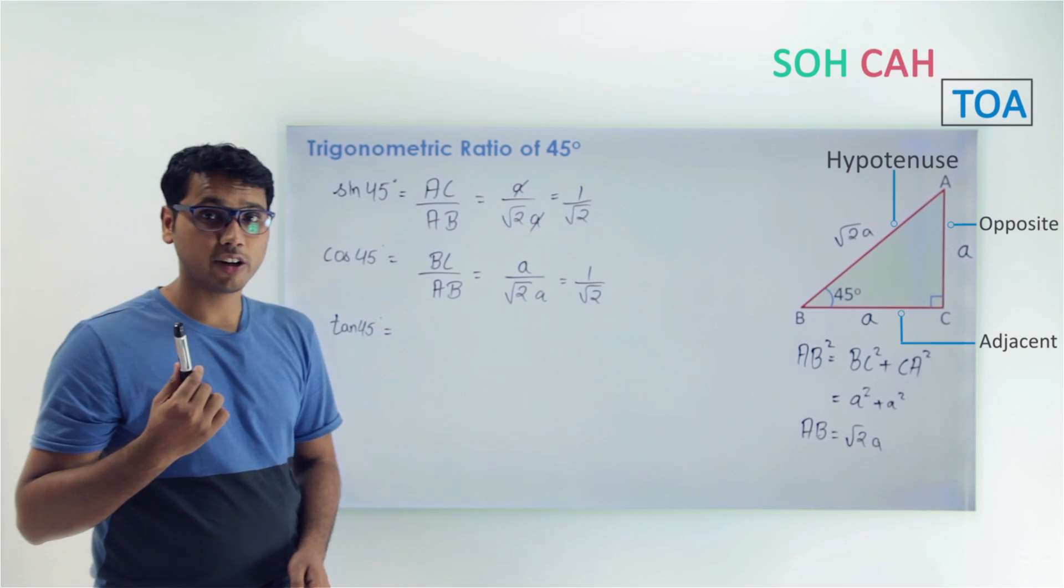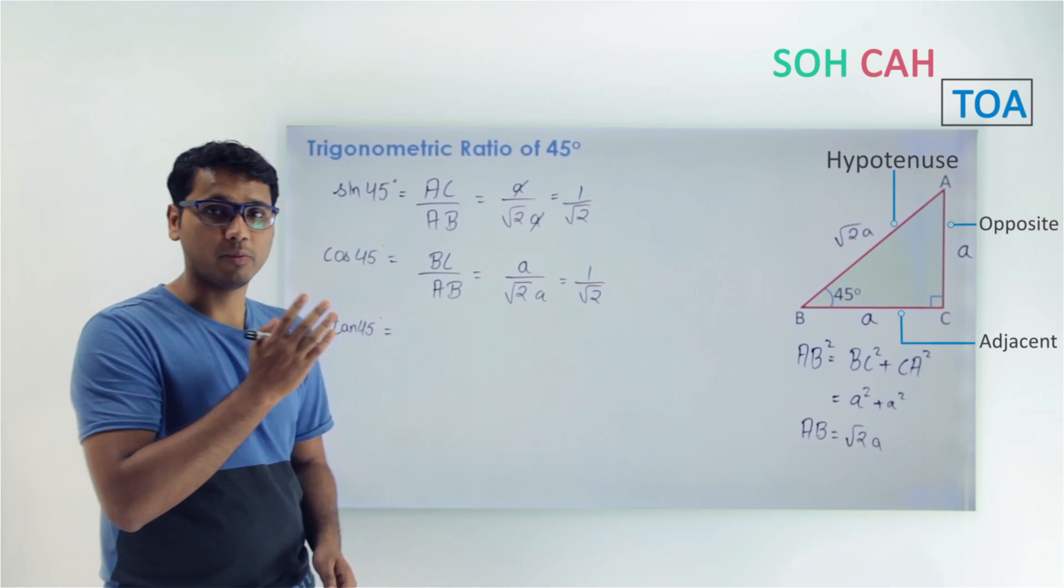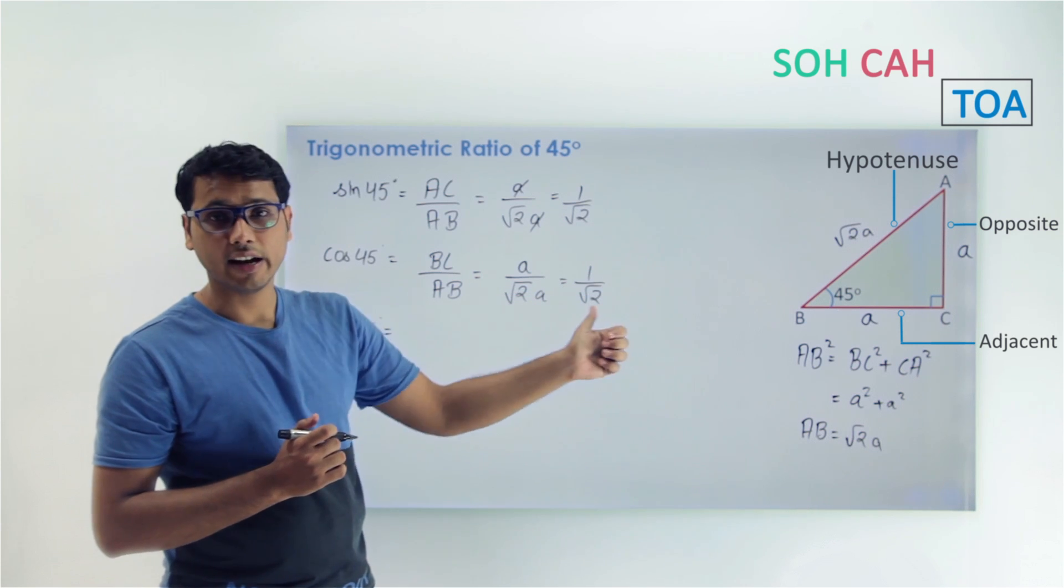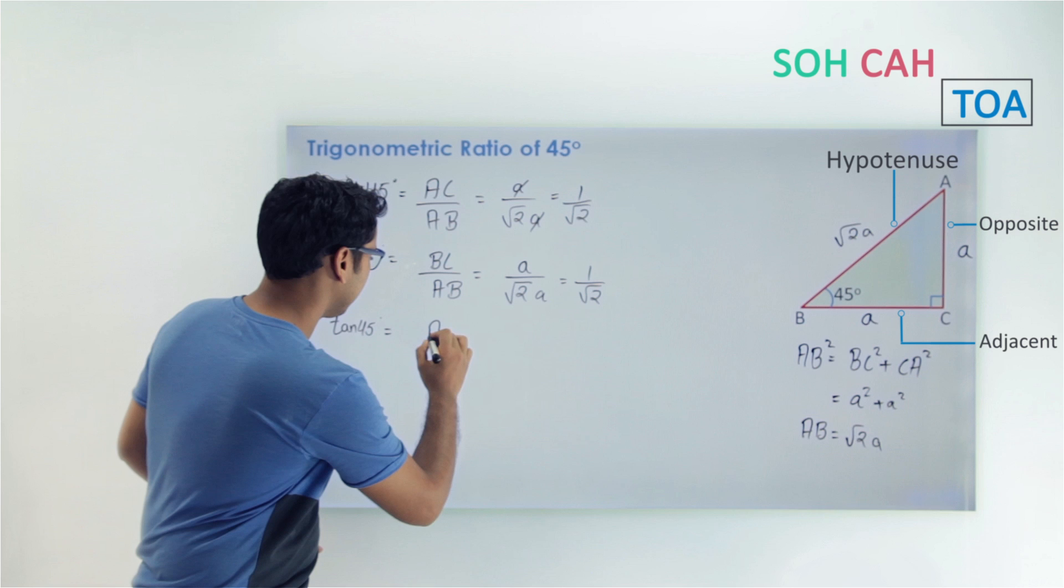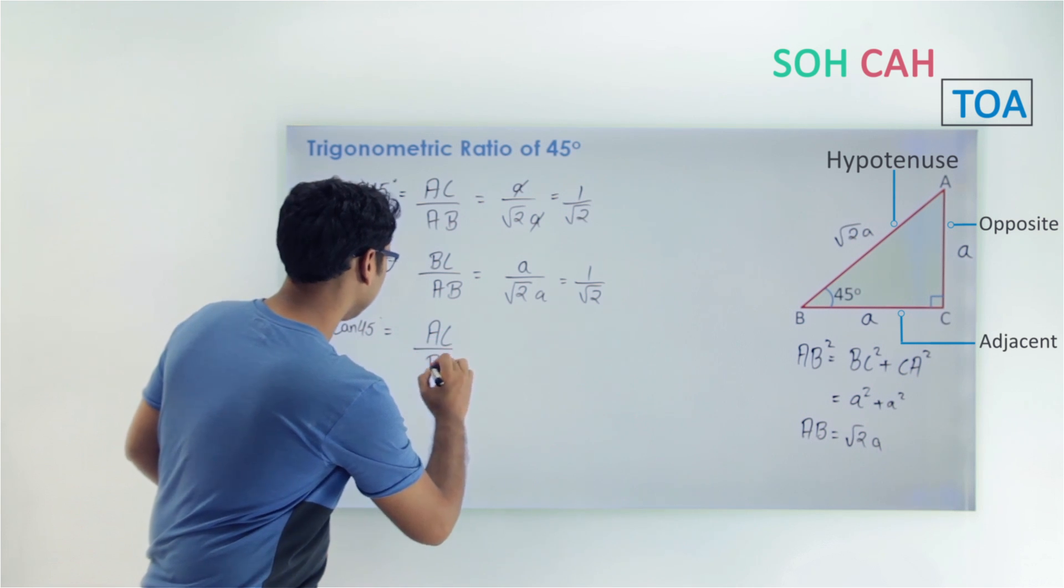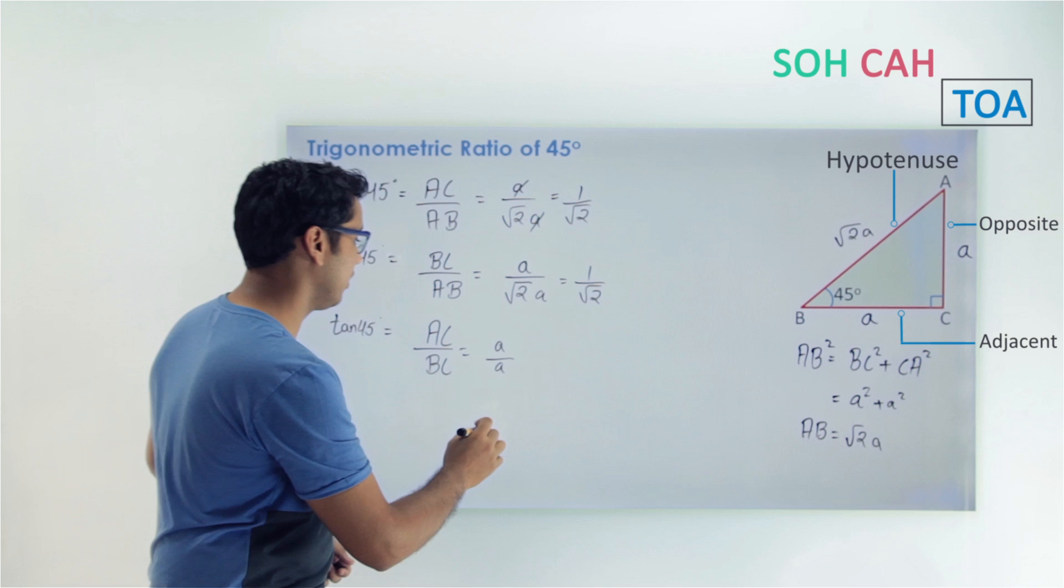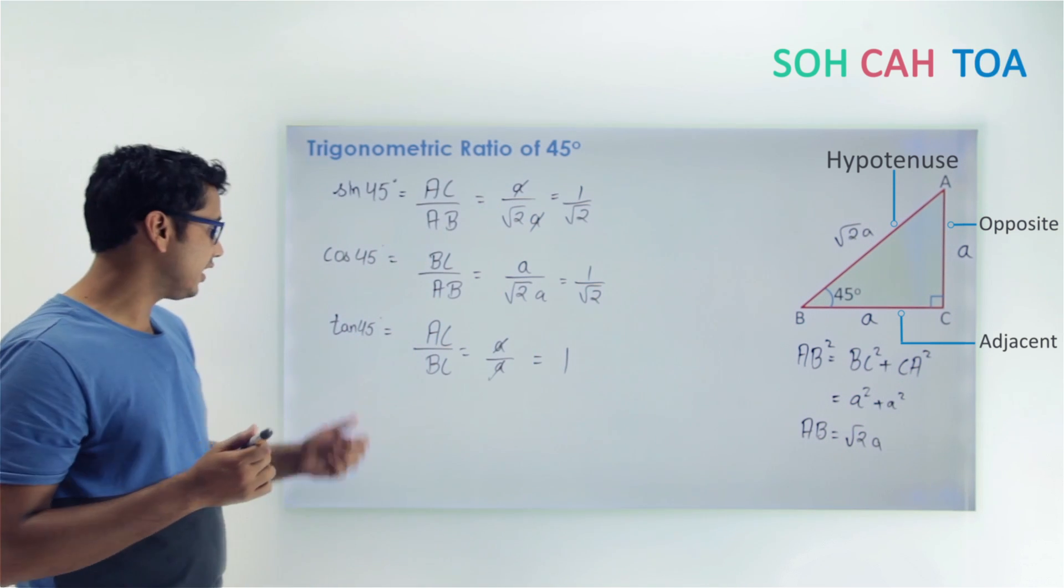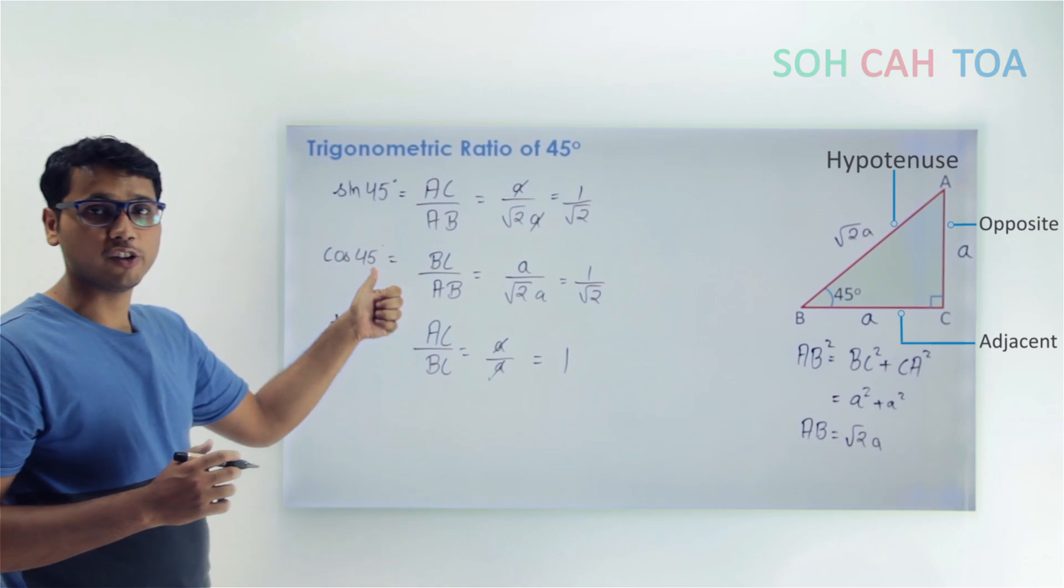Similarly, we can find the value of tan 45. Recall SOH CAH TOA? It is TOA. Tan is opposite upon adjacent. So opposite is AC and adjacent is BC. So this will be AC upon BC, or a upon a. If you cancel out, this will get 1. We can also find the value of tan 45 by dividing sin 45 and cos 45.